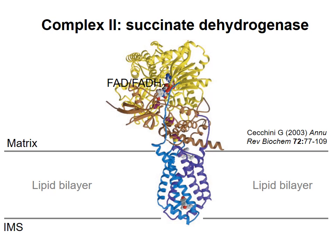Complex II, or succinate dehydrogenase, is shown in more detail here. You can see that the protein contains a cofactor called flavin adenine dinucleotide, or FAD. This is the group that accepts electrons when succinate is oxidized to fumarate, producing FADH2, or the reduced form of FAD.